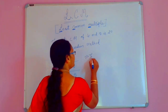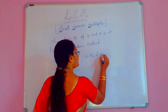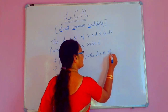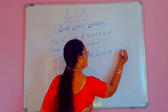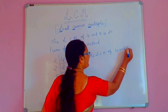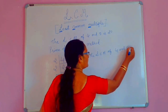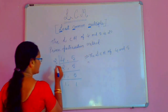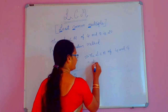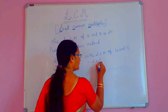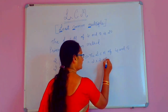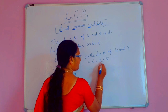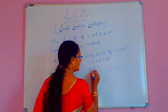Therefore, the LCM of 4 and 5 is equal to 2 into 2 into 5. That is, 2 twos are 4, and 4 fives are 20. This is the prime factorization method.